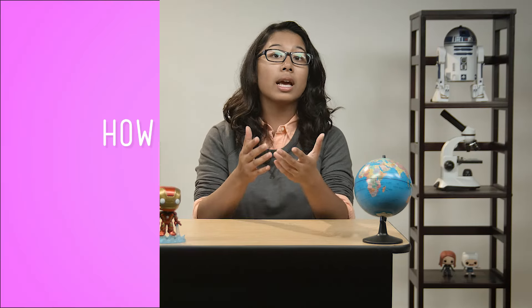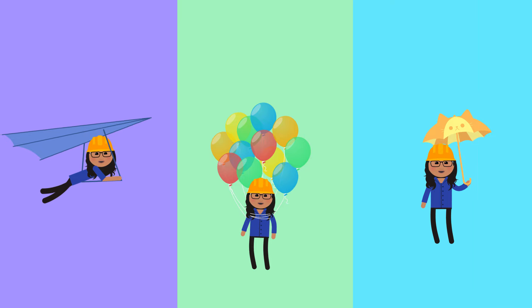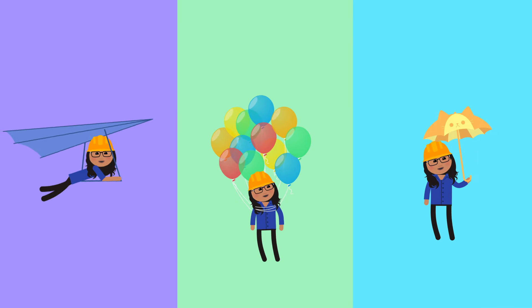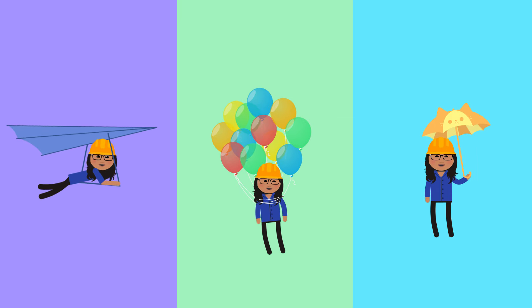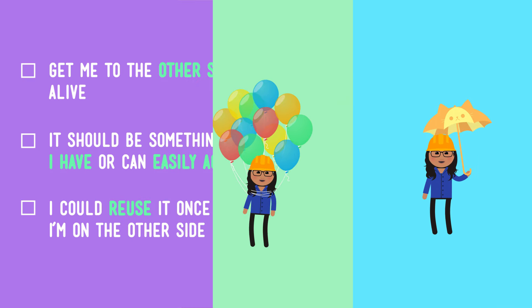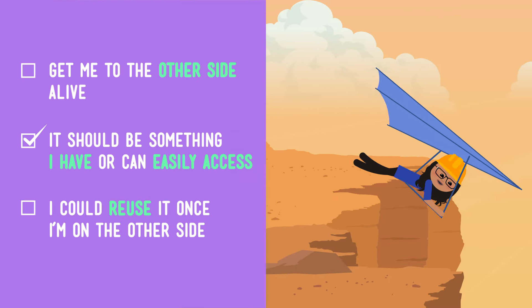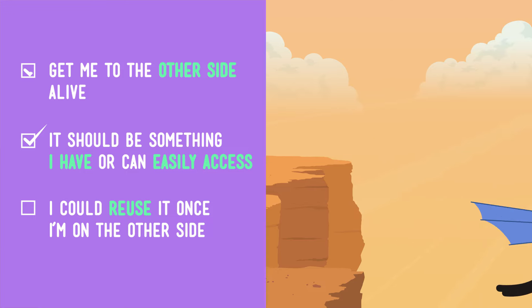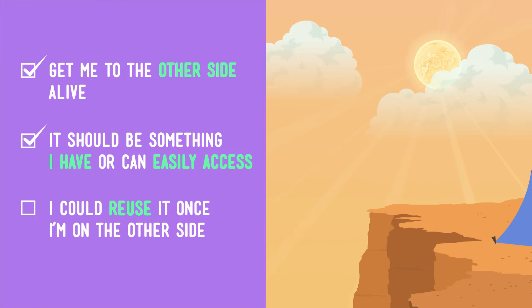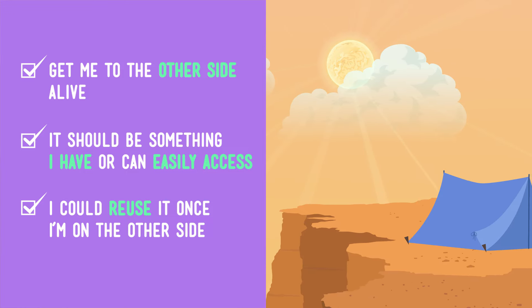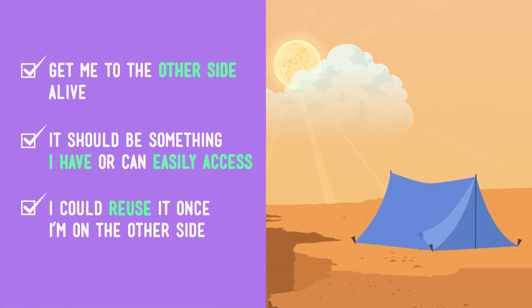A quick recap. We started by defining a solvable problem — in our case, how can we get across the gorge? We looked at more than one solution and chose a solution that met our criteria. It used the materials we had available, and it would successfully get us across the gorge in one piece. Plus, we could reuse the pieces afterward.